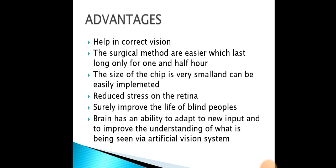Some advantages and disadvantages of this Bionic Eye. The advantages: it gives correct vision similar to the human eye. The surgical method is easier, lasting only about one and a half hours. The size of the chip is very small and can be easily implemented. It reduces stress on the retina and surely improves the life of blind individuals. The brain also has the ability to adapt to new input and improve understanding of what is seen via the artificial vision system.